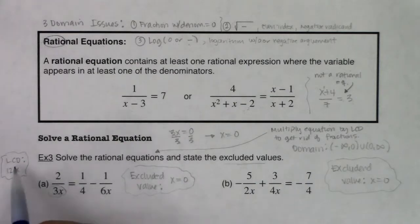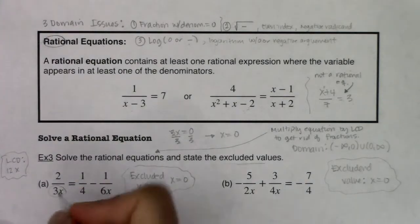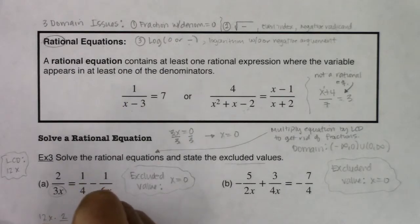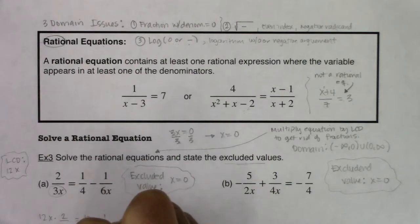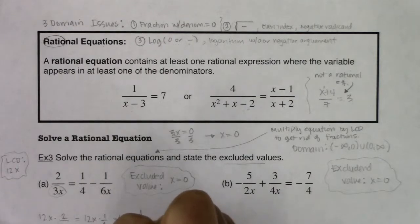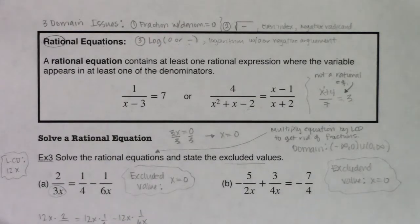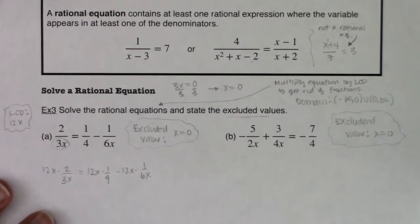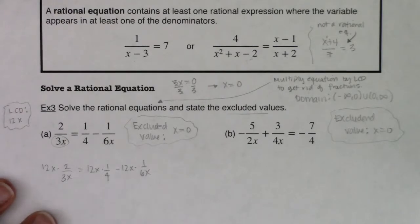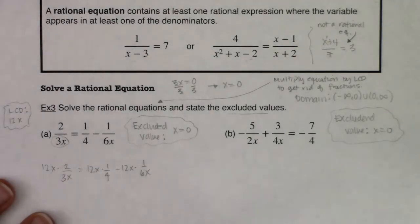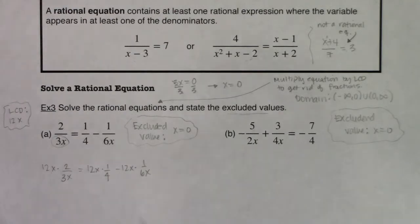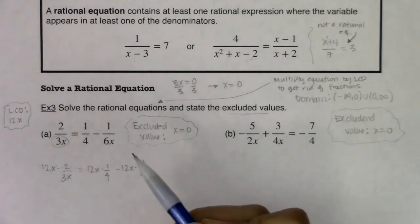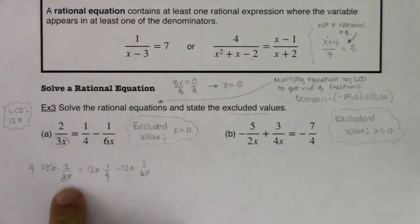I'll take my LCD and multiply it to each term: 12x times 2 over 3x, equals 12x times 1 over 4, minus 12x times 1 over 6x. Let's see what cancels. The x's cancel and the 3 and 12 simplify — my denominator's gone. 4 times 2 leaves me with 8. Here the 4 and 12 cancel and leave a 3, so 3 times x is 3x. The x's cancel again, and the 6 and 12 cancel leaving a 2 — 2 times 1 is 2. So I've taken the ugly equation with fractions and simplified it to 8 equals 3x minus 2.